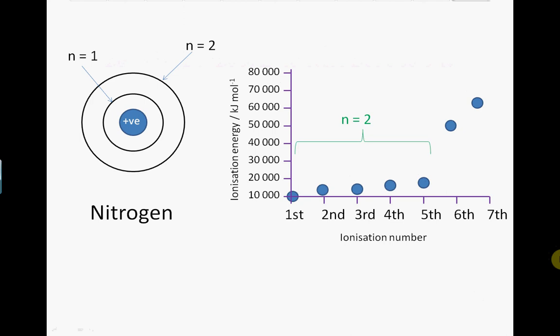However, when we remove the electrons from shell n equals one, there is a sudden jump up in the ionization energy. This is because the inner electrons are closer to the nucleus, and also the shielding has been reduced.